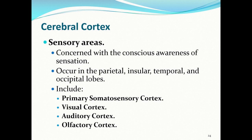The sensory areas of the cerebral cortex are concerned with conscious awareness of sensation. They occur in the parietal, insular, temporal, and occipital lobes and include the primary somatosensory cortex, the visual cortex, auditory cortex, and olfactory cortex. The primary somatosensory cortex receives sensory information from the skin (touch, temperature, pressure, pain) and from skeletal muscles (stretch and position). The visual cortex is for vision, the auditory cortex for hearing, and the olfactory cortex for smell.